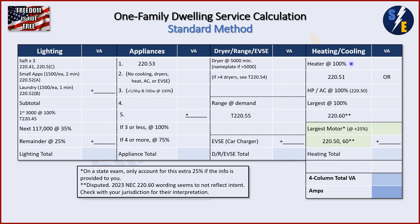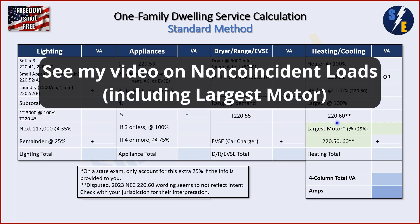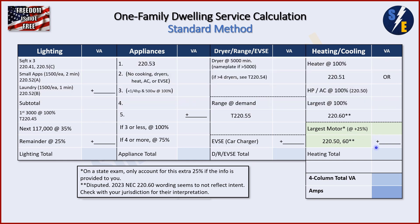Lastly, you've got your heating and cooling column. Take your heater at 100%, take your AC at 100%, and then compare the two and take the largest at 100%. That has to do with 220.60, which is non-coincident loads. Next, find your largest motor in the building and add an extra 25% to that, and add that to your largest heating load. Once you've got all four column totals, add them together to get your four-column total VA, divide by your voltage, and you get your amps — giving you your service size, feeder size, conduit size, and so forth.